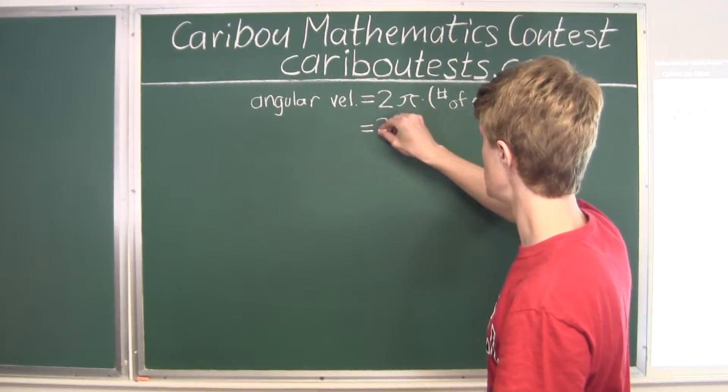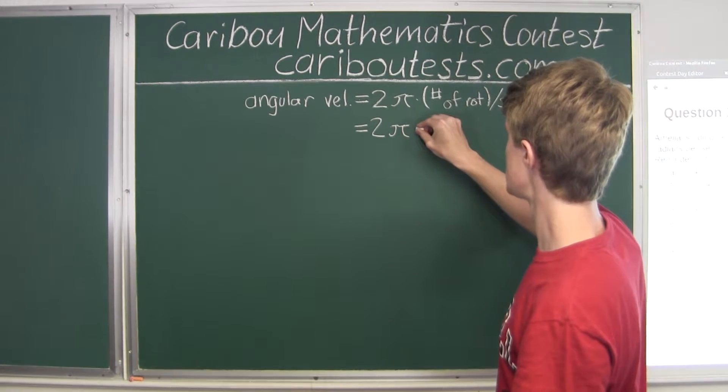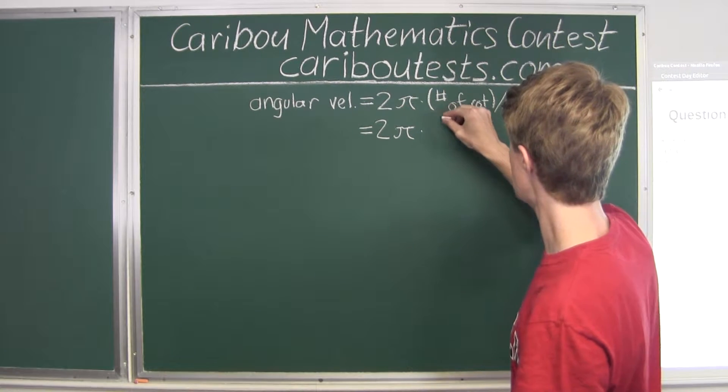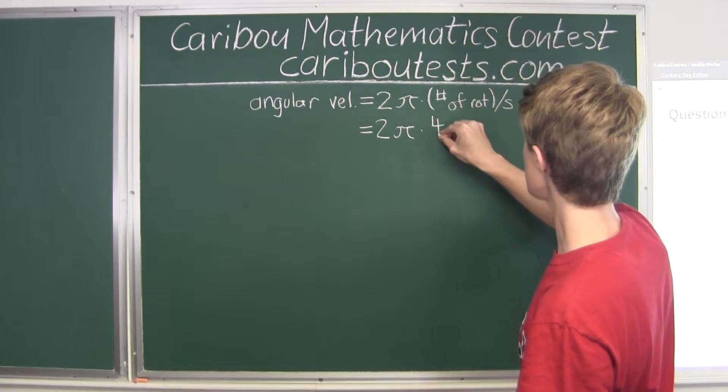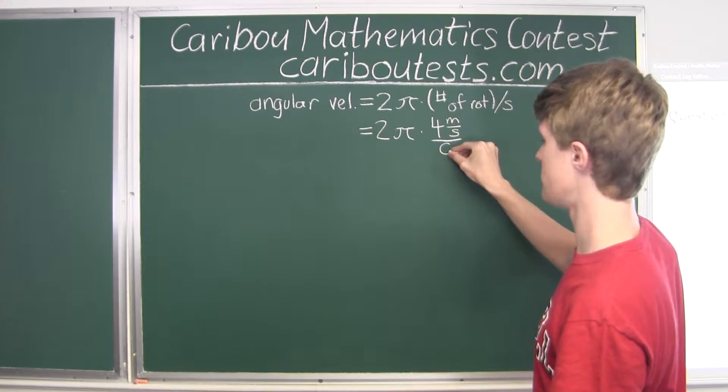So, we would still have 2π, and then this is times, and then we would have 4 meters per second, and that's divided by the circumference.